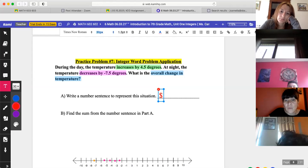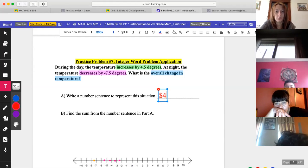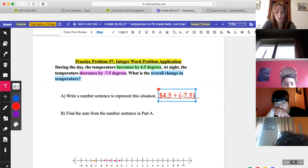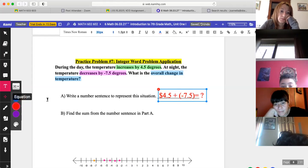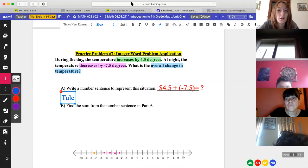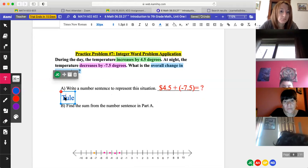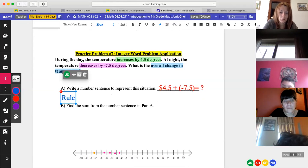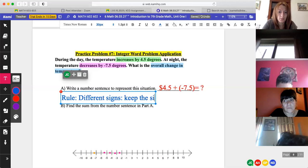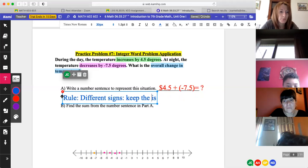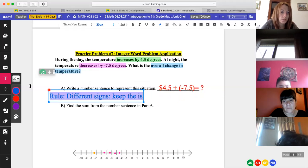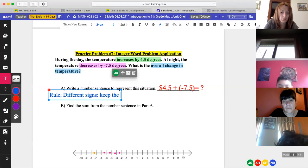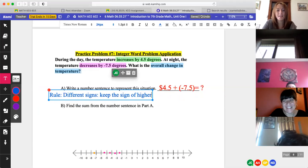The number sentence will be 4.5 plus negative 7.5. Oh, okay. Very nice. Then you will subtract because. Yes, what's the rule? If you don't have the same, the same sign, you don't add. So the rule states different signs. Keep the sign of the higher number. And what? Nice rule. And. Keep this, not sing. I keep writing, sing today. You hear that? You see that, Miss B? Keep the sign of the higher number and sub. Okay.